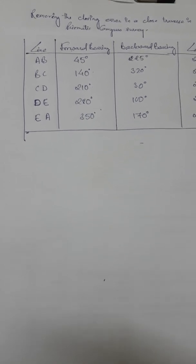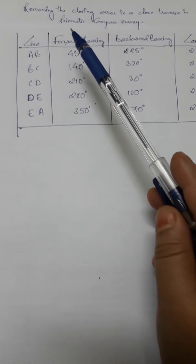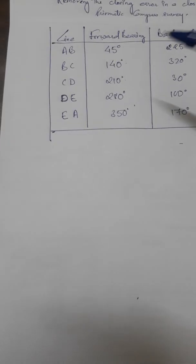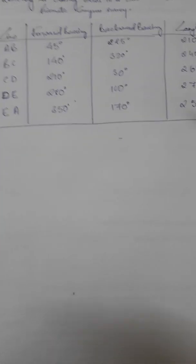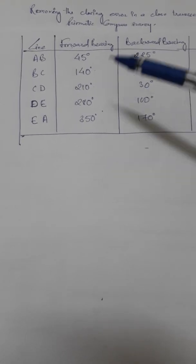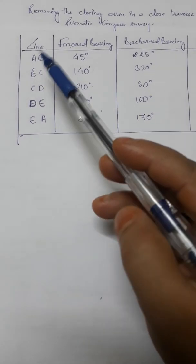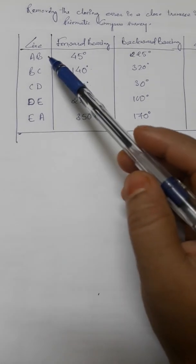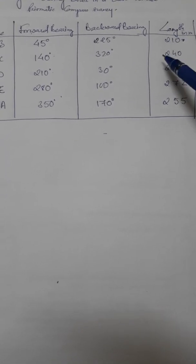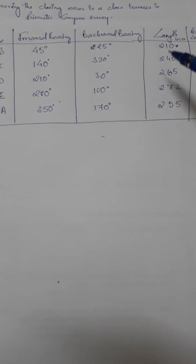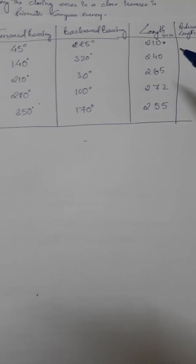Here I will show you how to plot this reading. These values of forward and backward bearing have been collected with the help of a prismatic compass, and these are the lines of a closed traverse. We are starting from A and ending at A. Forward bearing represents when you are sighting the line AB from position A, and backward bearing is the bearing when sighting from B to A. You also have to collect the length of each line using a tape, and I have given some lengths for these lines in meters.